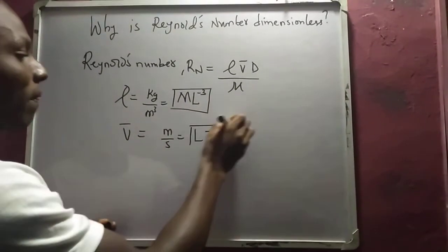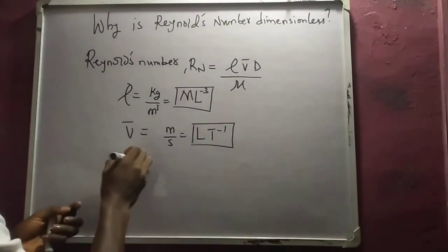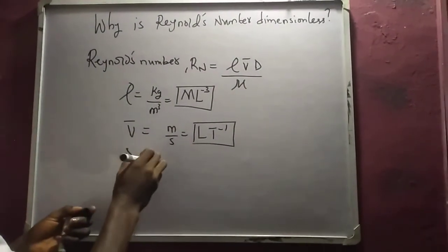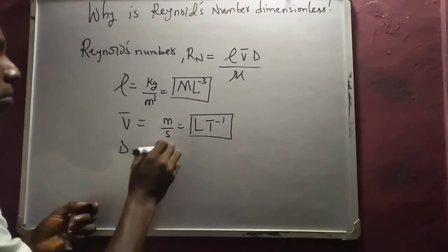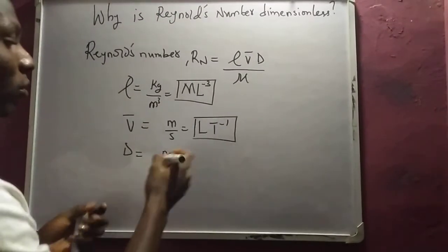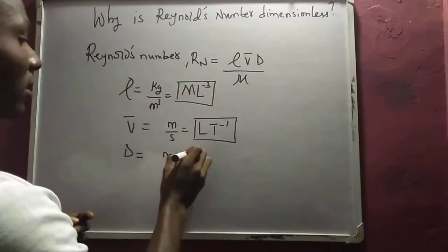Right. So for diameter D, just m—sorry, it has to be small letter m to distinguish it from our mass. So this is L.